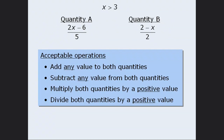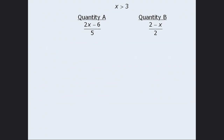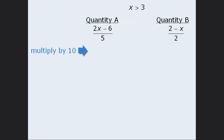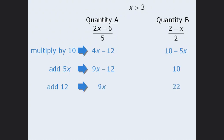Remember that we can use any combination of these acceptable operations. To begin, let's get rid of the fractions by multiplying both quantities by 10. If you're uncertain why we should multiply both quantities by 10 here, we'll cover that concept later on in the Algebra and Equation Solving module. For now, just know that multiplying both quantities by 10 will successfully eliminate the fractions. From here, let's try to get the variables on one side and the non-variables on the other side. We can add 5X to both quantities, then add 12 to both quantities. And finally, if we divide both quantities by 9, we're left with X in quantity A, and in quantity B we're left with 22 over 9, which we can rewrite as 2 and 4 ninths.